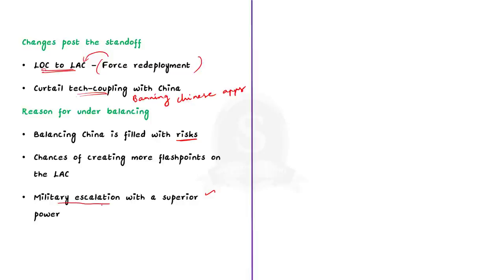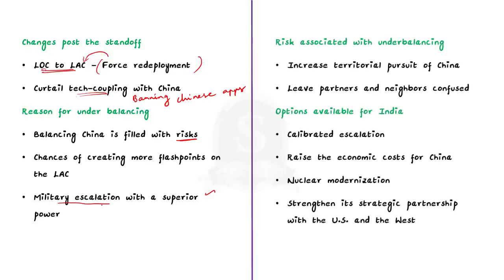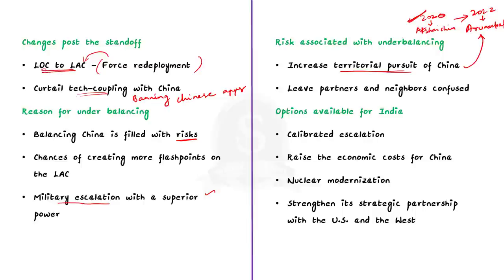There are risks associated with underbalancing as well. With no action from India, China would increase its tempo of territorial pursuit. In 2020, China started an armed conflict in the region of Aksai Chin. But during the past months, there was another flashpoint along the LAC in the region of Arunachal Pradesh — this is an example of China increasing its territorial pursuit along different areas of the LAC. If India had responded aggressively to the 2020 conflict, this incident in Arunachal Pradesh would not have happened. Secondly, when we don't articulate our red lines clearly, our partners and neighbours remain confused as to when they should come for our aid.